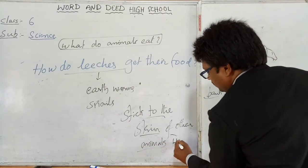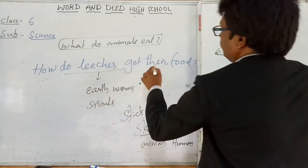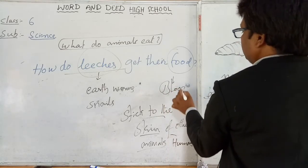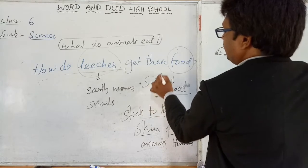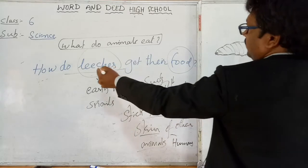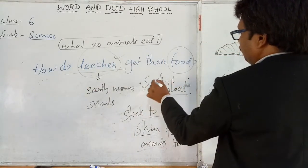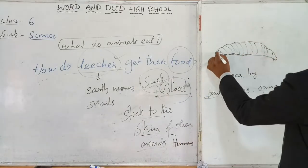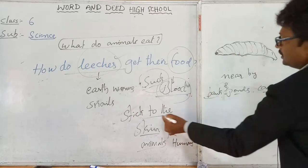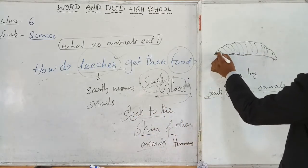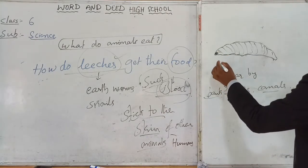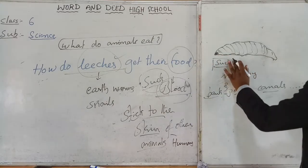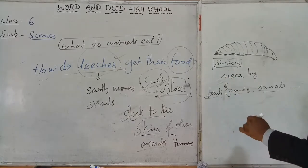Leeches stick to the skin of animals including human beings. What is the main food of leeches? They suck the blood of other animals. The main food of leeches is blood. They collect blood by sucking. Special parts present in their mouth help them stick to the skin of other animals and suck — these parts are called suckers.